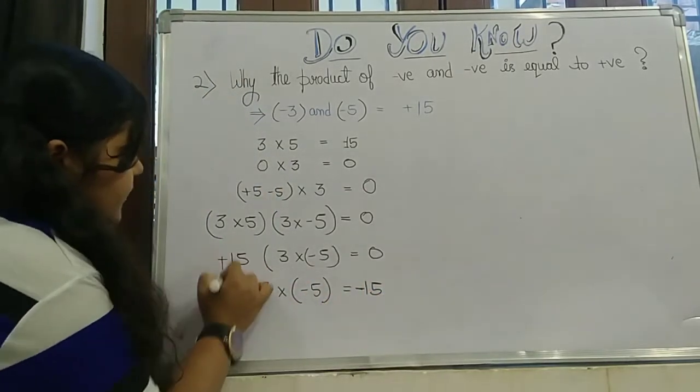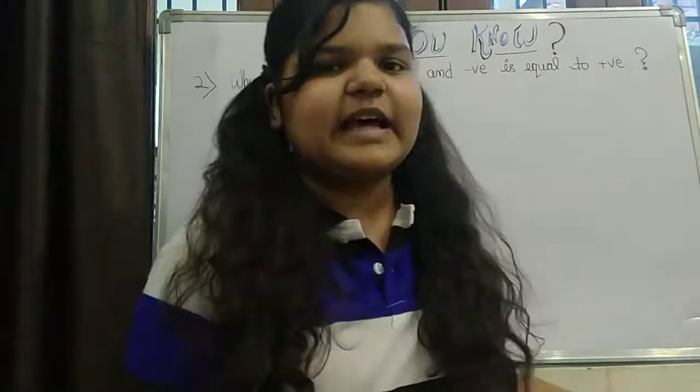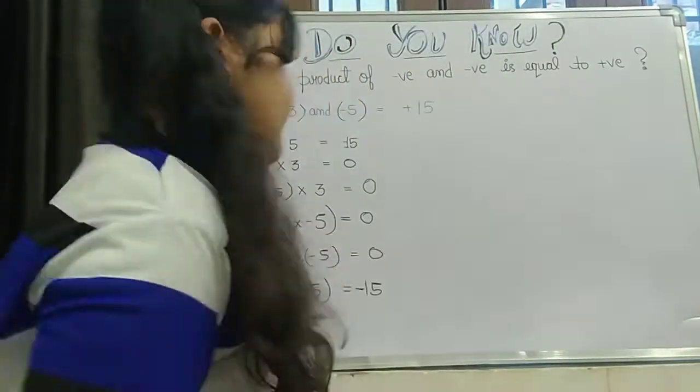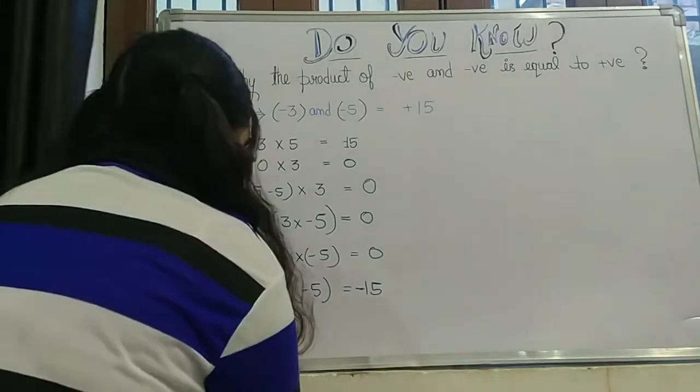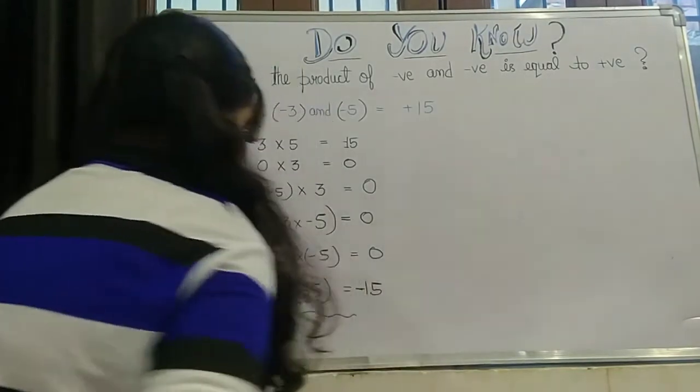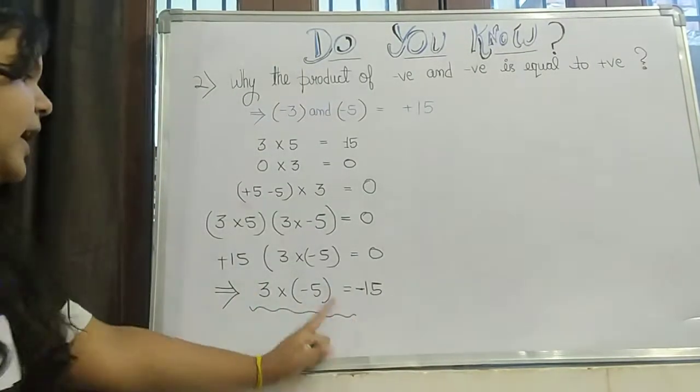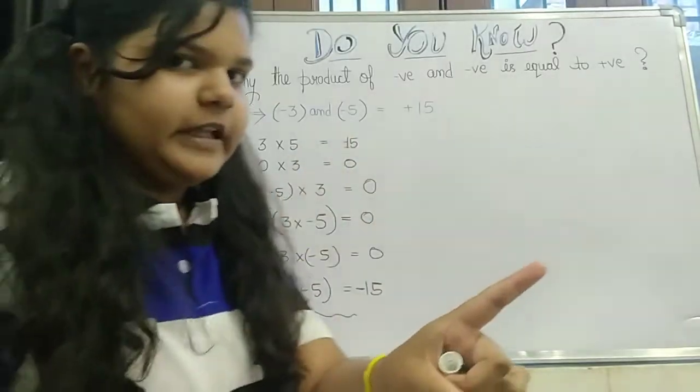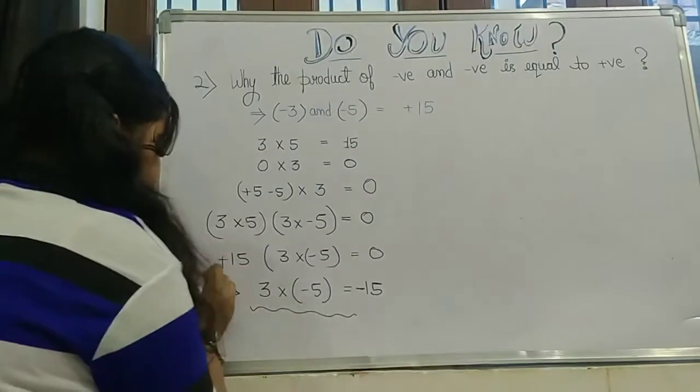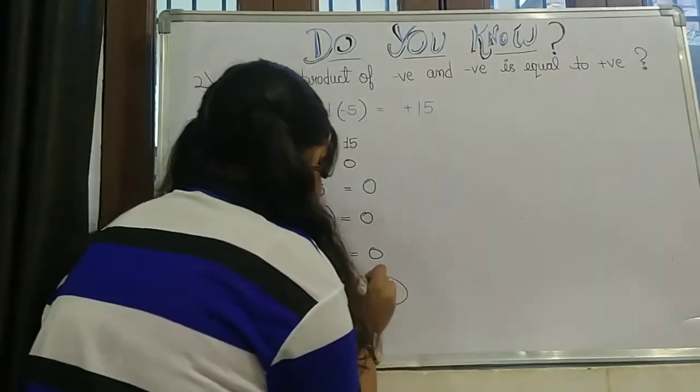When this positive 15 goes on your left-hand side, it will become negative. So this was the first proof where we have proved that 3 into minus 5 is equal to minus 15. This thing is clear. So this is our first proof.